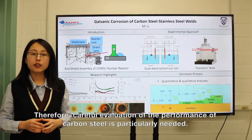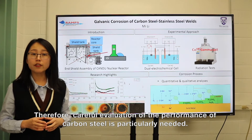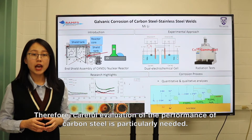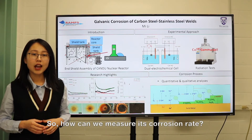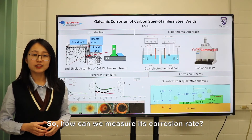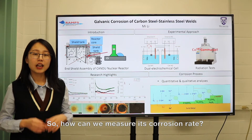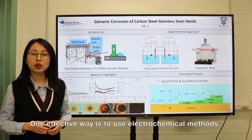Therefore, careful evaluation of the performance of carbon steel is particularly needed. So how can we measure its corrosion rate? One effective way is to use electrochemical methods.